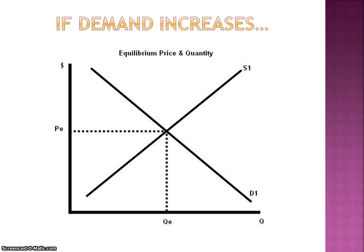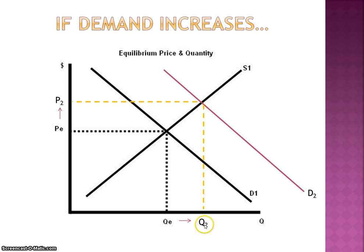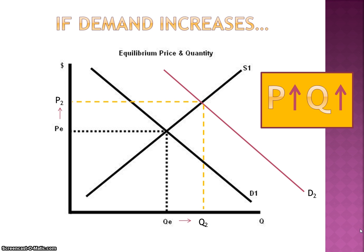Let's take a look first at the possibilities with demand. If demand increases, the demand curve is going to shift to the right. As that curve shifts to the right, the new equilibrium is farther over to the right and higher. We can see it's moved up, so the new equilibrium price is higher than before and the new equilibrium quantity is also higher than before. We're just looking comparatively at where it was and where it is now. So when demand increases, equilibrium price and equilibrium quantity both increase.